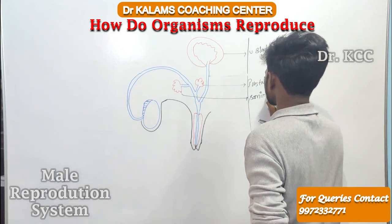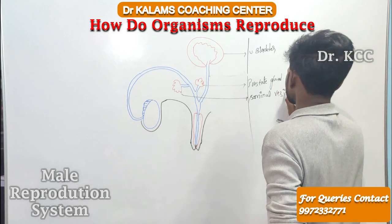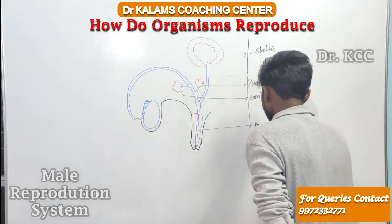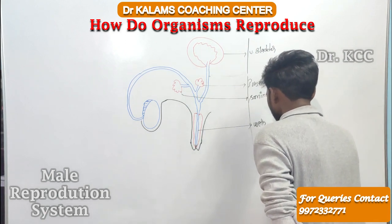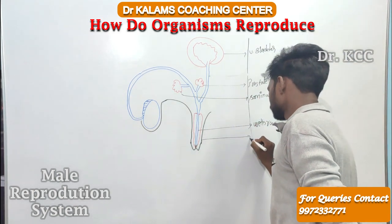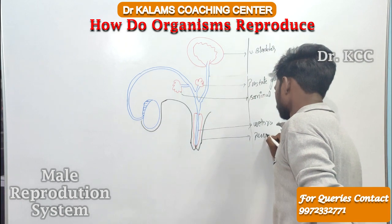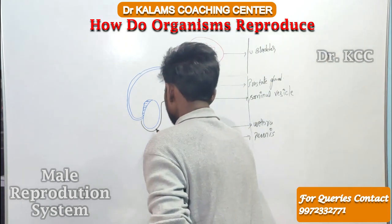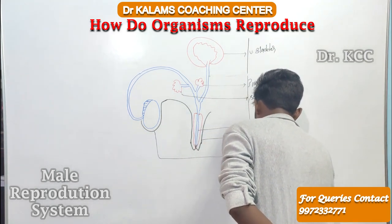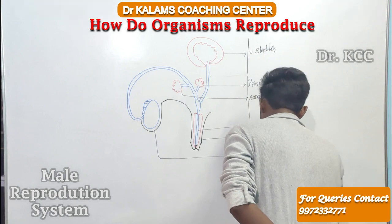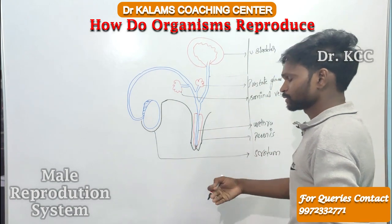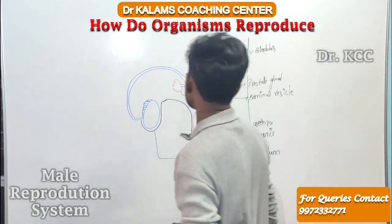This is your seminal vesicle. This is your urethra — the urethra is a common passage for both urine and sperms. Then this is your penis, and this is your scrotum. The scrotum is a sac-like structure whose main function is to provide a lower temperature than the body temperature.